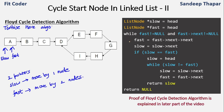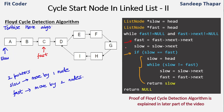We take two pointers, slow and fast. Fast moves by two nodes, slow by one. If at any node slow and fast become equal, a cycle is present. Some code is common with the previous video. Initially slow and fast are both at head. We run a while loop until fast is null or fast is the last node. Fast moves to fast.next.next — so from A, fast goes to C. Slow moves to slow.next — so slow goes to B. Slow and fast are not equal, so we continue.